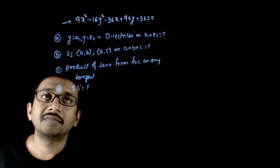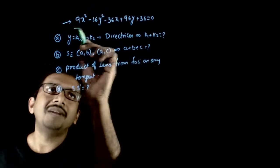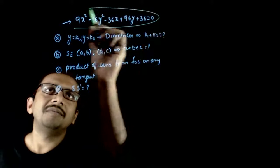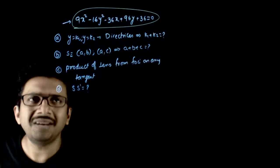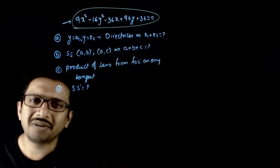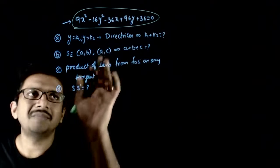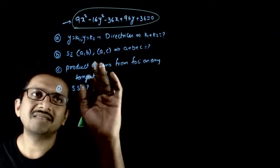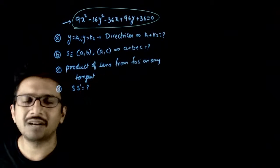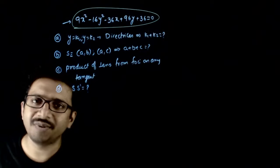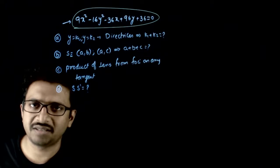Welcome students. In this question, you are given a hyperbola — an equation of a hyperbola — and you are asked to find some properties: something about directrices, foci, product of perpendiculars from foci on any tangent, and distance between the foci. These are the four questions which are asked.